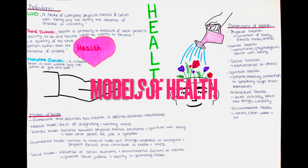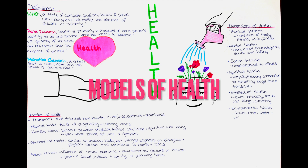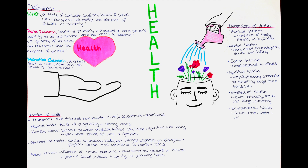What is a model of health and what different models exist? A model of health is a theoretical framework that describes how health is defined, achieved and maintained. It provides a way to understand the complex and multifaceted nature of health and to identify the factors that influence it. Models of health can be used to guide research, policy development and health interventions.